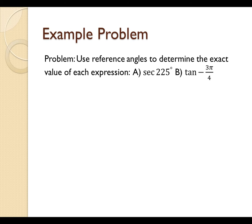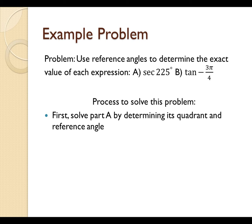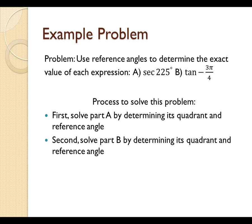So, now let's discuss our example problem, which is, use reference angles to determine the exact value of each expression: A) secant of 225 degrees and B) tangent of negative 3π over 4. The general process that I follow when approaching these kinds of problems is to first solve part A by determining its quadrant and reference angle. Then, I repeat this process when solving part B.